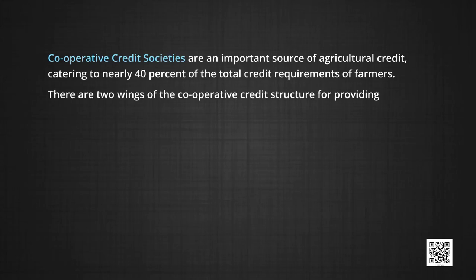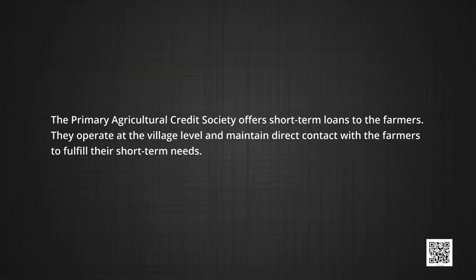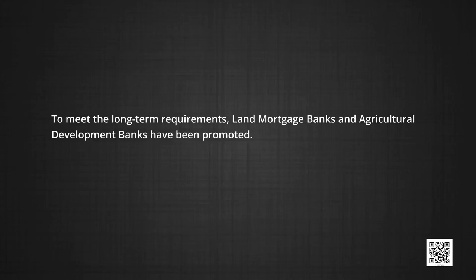There are two wings of the cooperative credit structure for providing short-term and long-term credit. The primary agricultural credit society offers short-term loans to farmers; they operate at village level and maintain direct contact with the farmers. For its own requirements of finance, it is linked to a central cooperative bank which operates at the state and district level. At present there are more than 350 such banks. To meet the long-term requirements, land mortgage banks and agricultural development banks have been promoted. The loans are primarily meant for the purchase of tractors and tube wells.